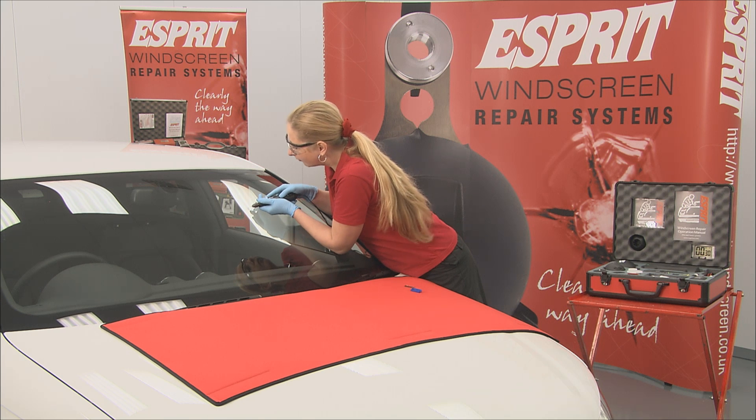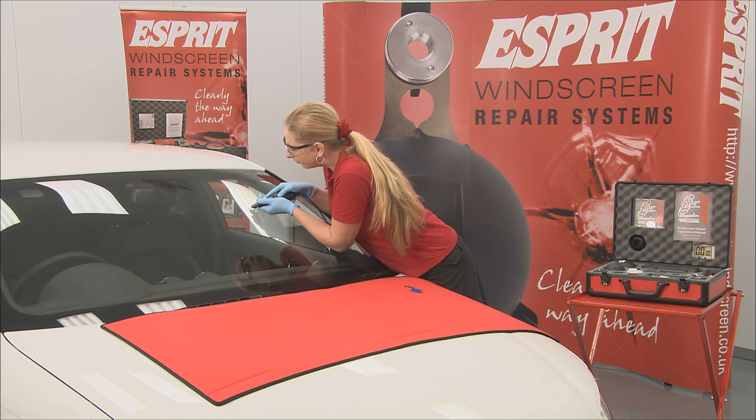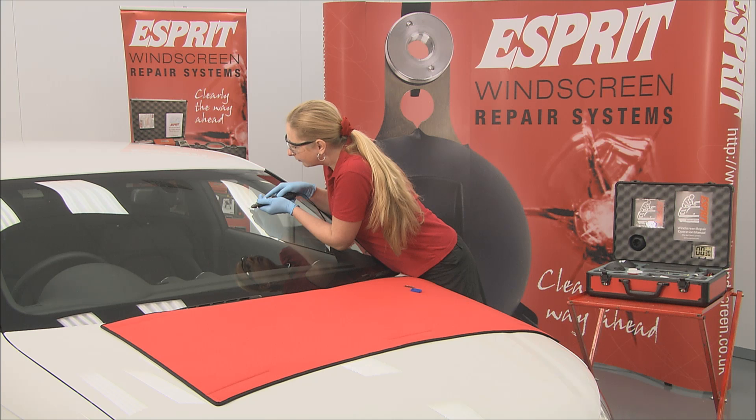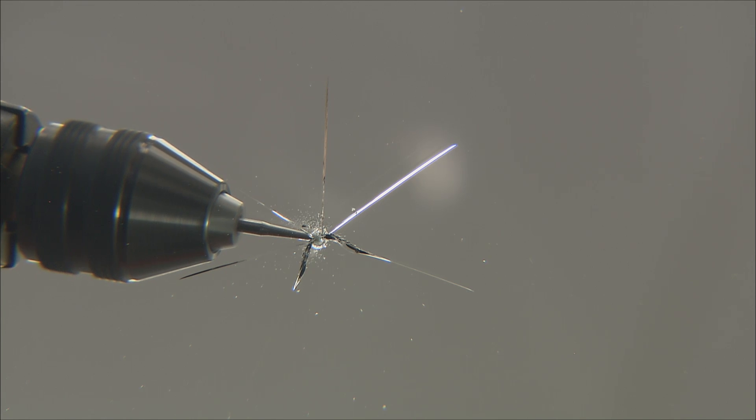The drill is switched on and set to a low speed. The burring operation will ensure that any dirt, grease or loose glass around the impact area are removed.